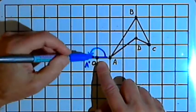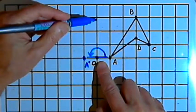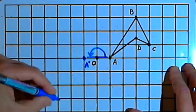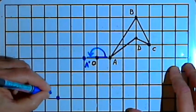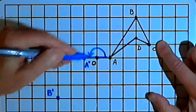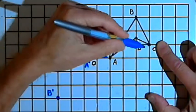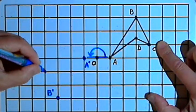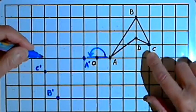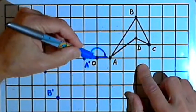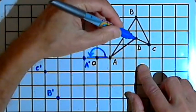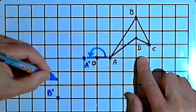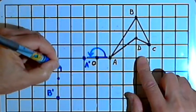To get to point B from point O, the center of rotation, I would go three units up and three units to the right. So B prime is going to be three units down and three units to the left. To get to point C, I go back to point O, go one unit up and four units to the right, so C prime will be one unit down and four units to the left. And to get to point D, I start at point O, go one and a half units up and three units to the right, so D prime is one and a half units down and three units to the left.